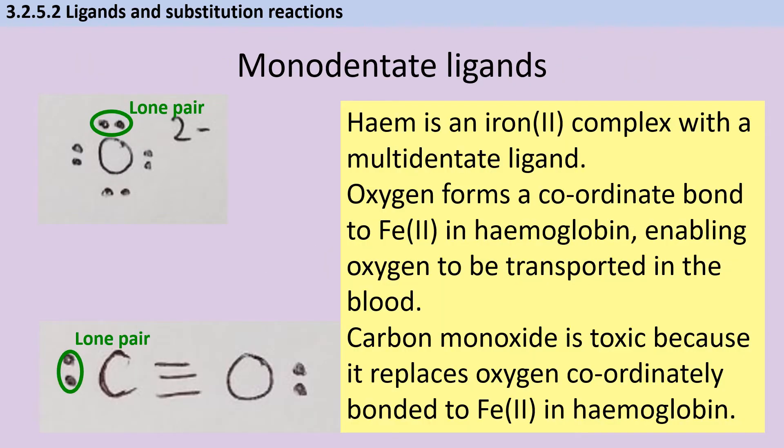You should specifically know about heme, which is an iron(II) complex with a multidentate ligand. Oxygen forms a coordinate bond to the iron(II) in haemoglobin, enabling oxygen to be transported in the blood. Carbon monoxide is toxic because it replaces oxygen coordinately bonded to the iron(II) in haemoglobin.